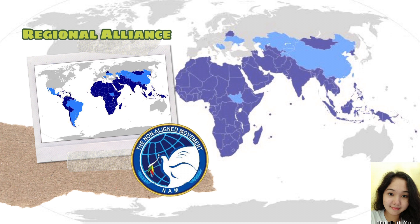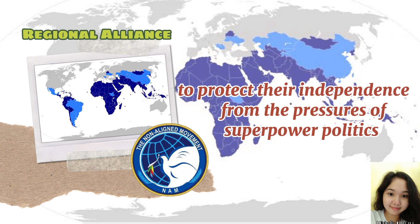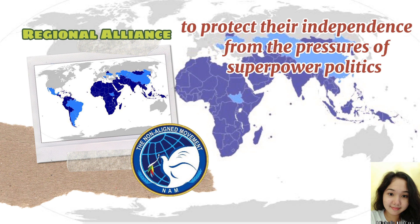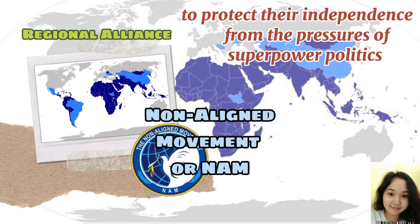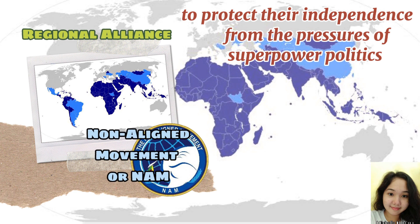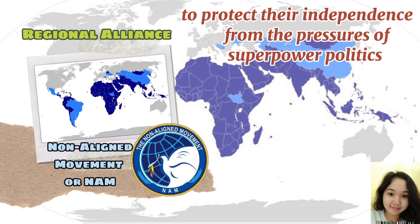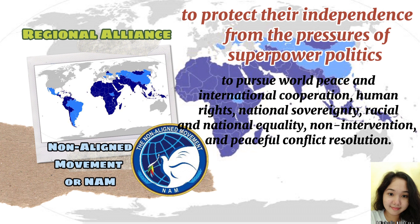Moreover, some countries formed regional blocs to protect their independence from the pressure of superpower politics. The Non-Aligned Movement, or NAM, was created by the presidents of Egypt, Ghana, India, Indonesia, and Yugoslavia in 1961 to pursue world peace and international cooperation, human rights, national sovereignty, racial and national equality, non-intervention, and peaceful conflict resolution.